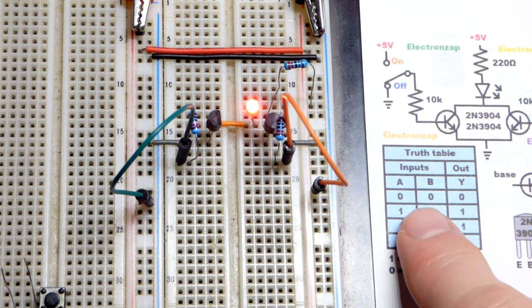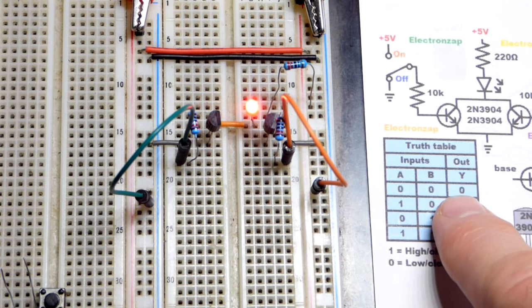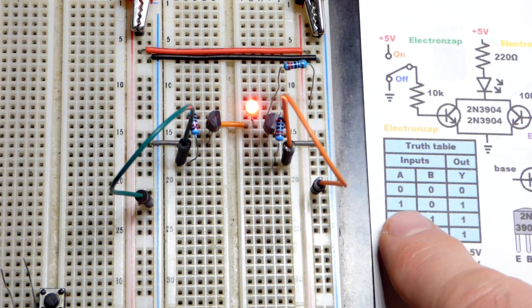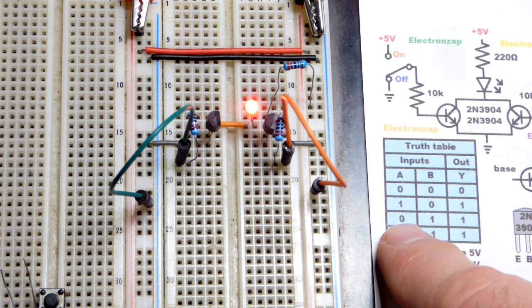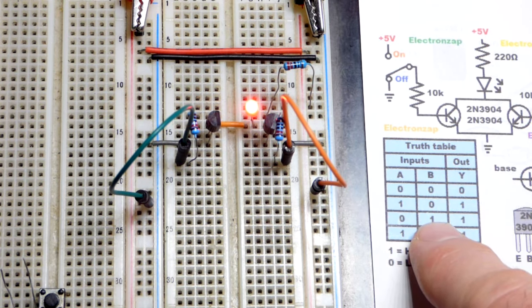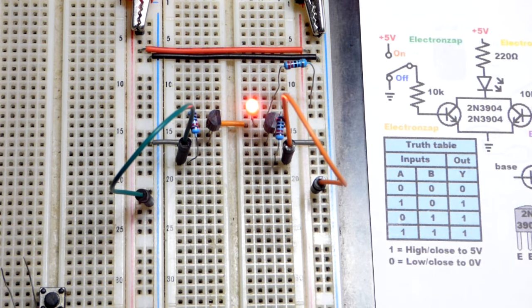So, we had both off, means the LED was off. One transistor on, the output is on, even though the other transistor is off. One transistor off, and then the other transistor on. Again, the output was on.